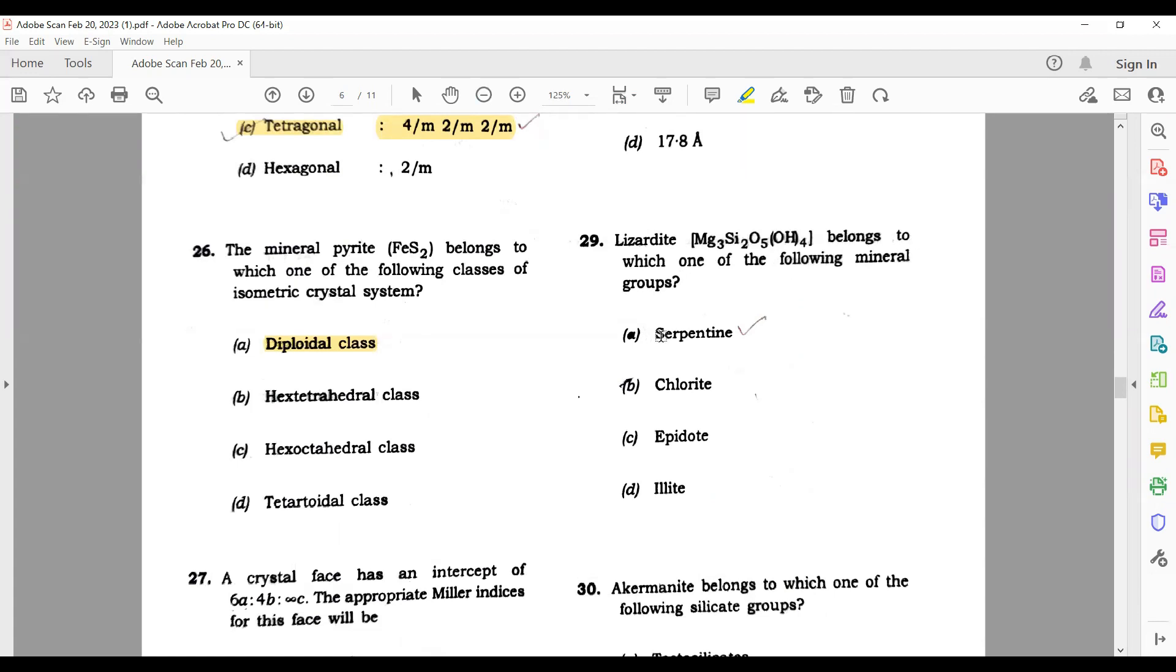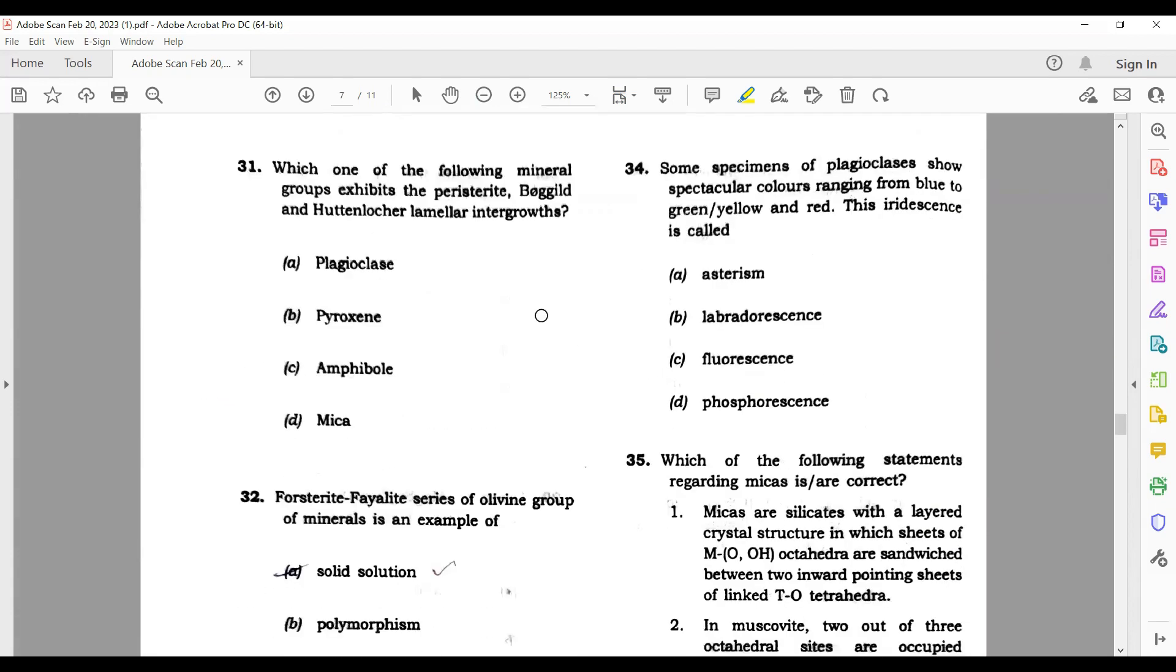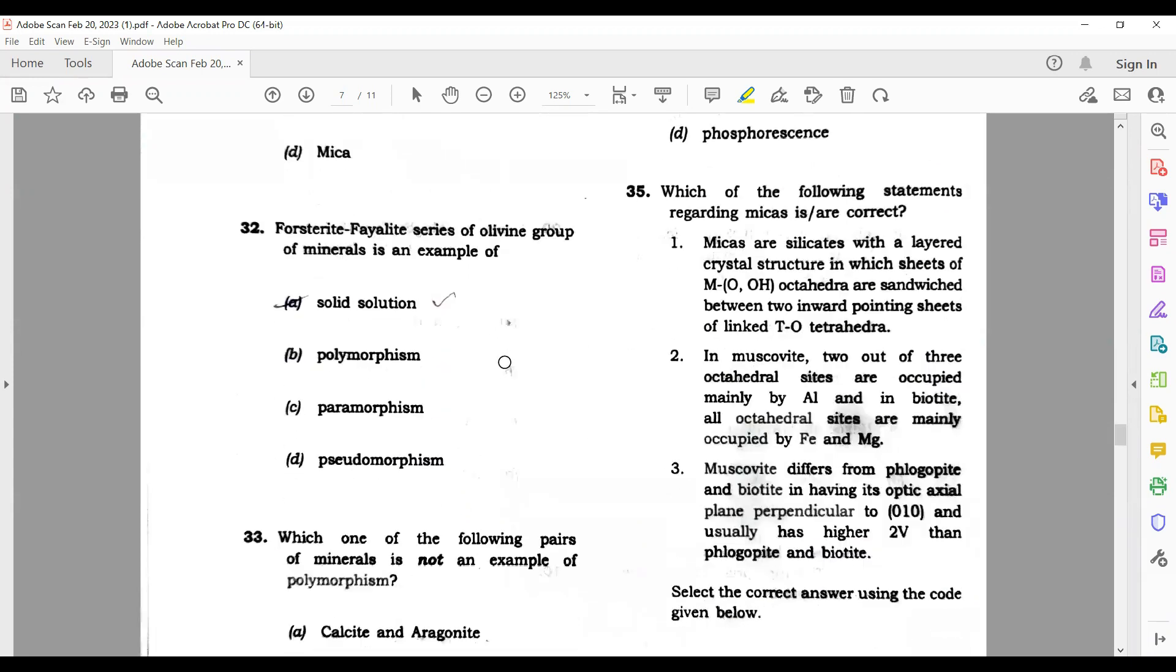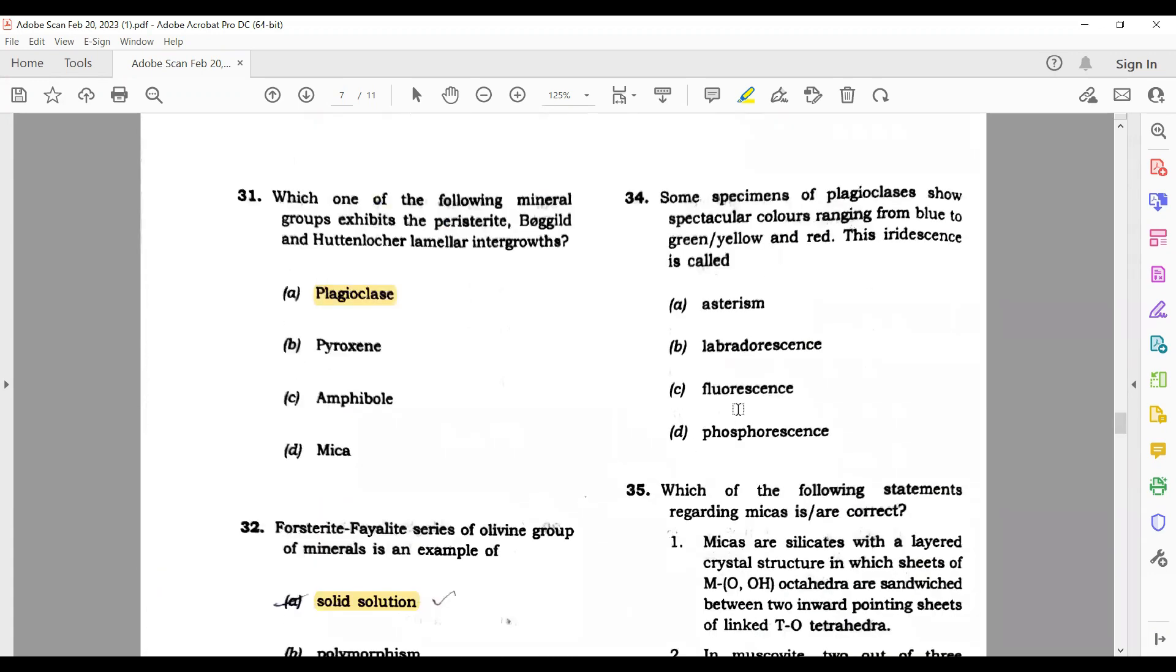Lizardite belongs to serpentine. Acromite is sorosilicate. Which one of the following minerals exhibit parasitic, polysynthetic, and Carlsbad twinning? Carlsbad is shown by plagioclase. Perthite is a solid solution. Which one of the following pairs of minerals is not an example of polymorphism? Calcite and aragonite - same. Tridymite and cristobalite SiO₂. Pyrite and marcasite - same. Enstatite and ankerite is your only option which are not representing polymorphism.